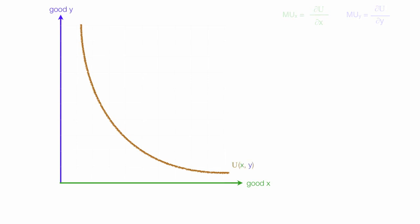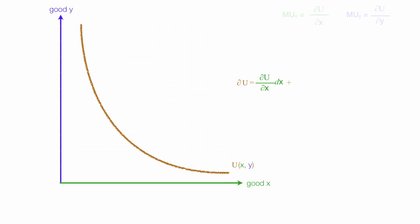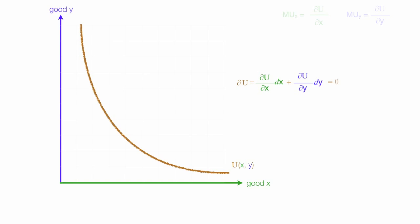Now I'm going to do a partial derivative. The change in utility is the partial derivative of u(x, y) with respect to X — that's the change in utility with respect to changes in X — plus the partial derivative of u with respect to Y, times dy. Since the change in utility is zero, this equals zero. Note that these partial derivative terms correspond to MUx and MUy respectively.